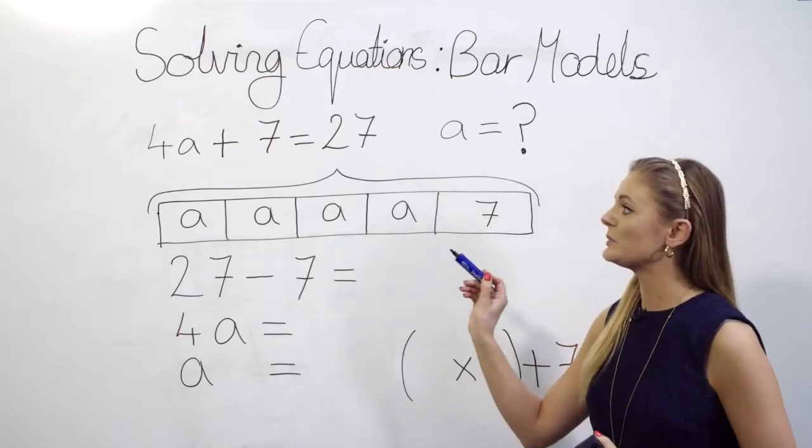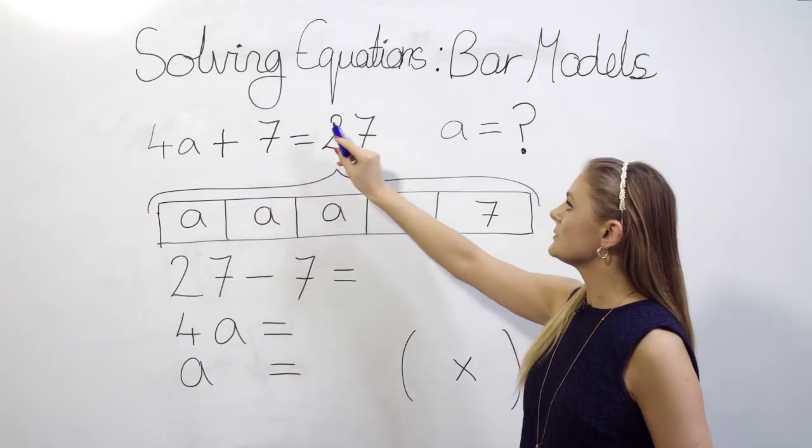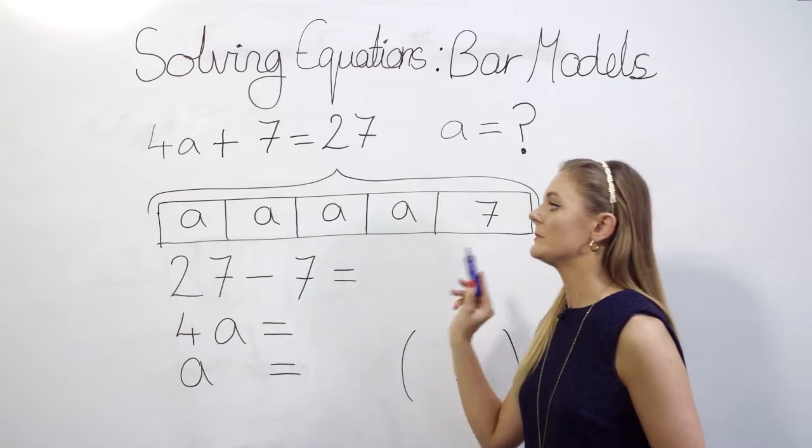So let's take this example. I've got 4a plus 7 which equals 27 and we want to figure out the value of a which is an unknown value at the moment.